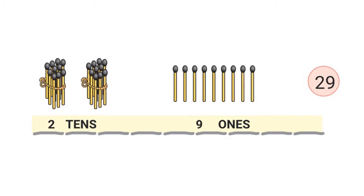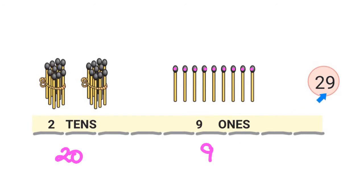Here I have 2 tens which is 20, and I have 9 ones: 1, 2, 3, 4, 5, 6, 7, 8, 9. So I have 20 and 9 — 29 matchsticks in all.